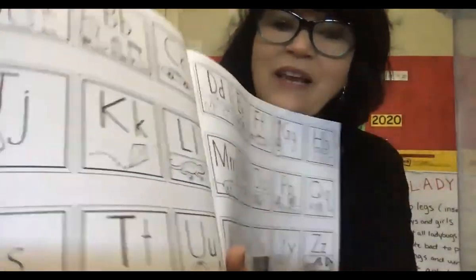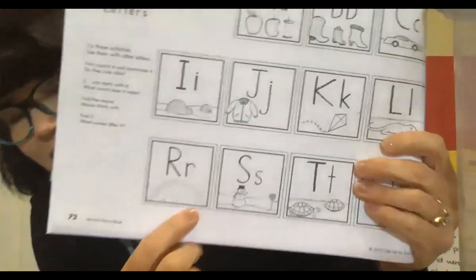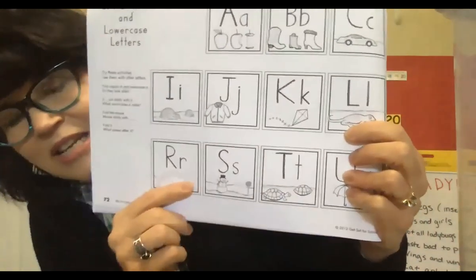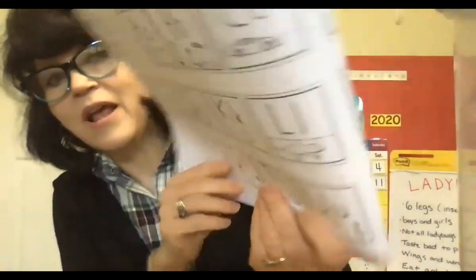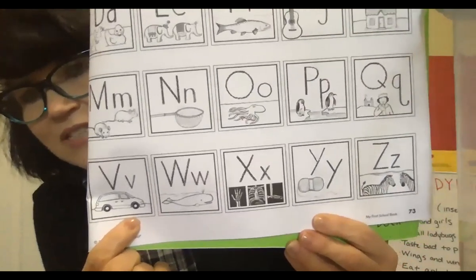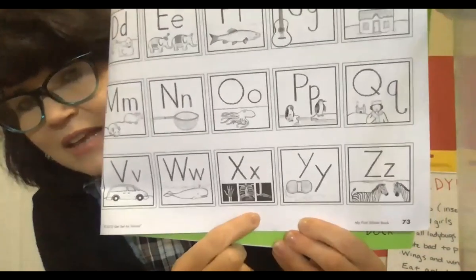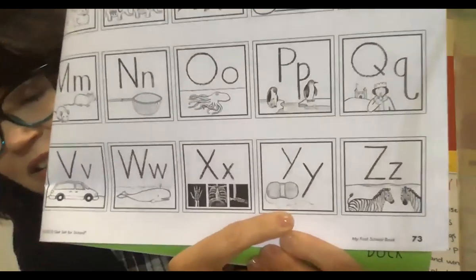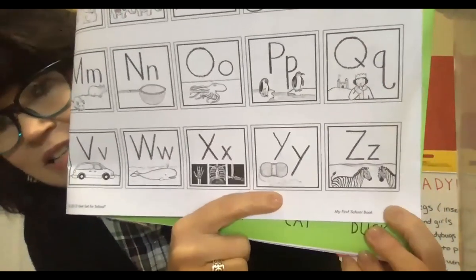Q says Q as in queen. Let's look here. R says R as in rainbow. S says S as in snowman. T says T as in turtle. U says U as in umbrella. All right, almost there. What does V say? V says V as in van. W says W as in whale. X says X as in x-ray. Y says Y as in yarn, that's right. And Z says Z as in zebra.